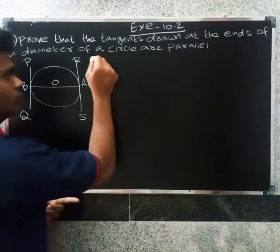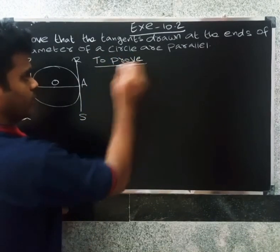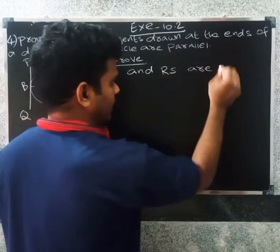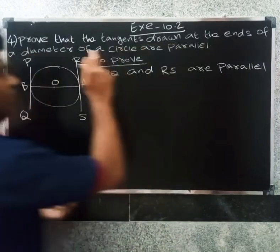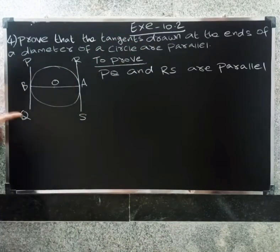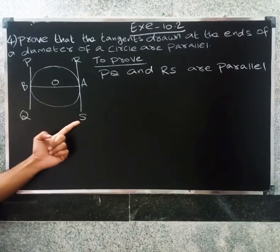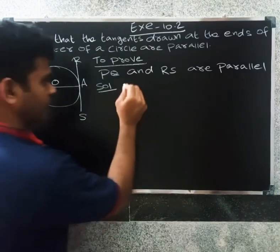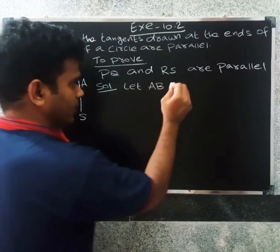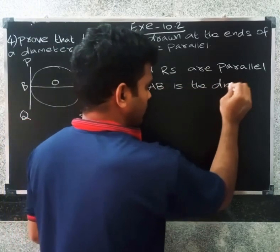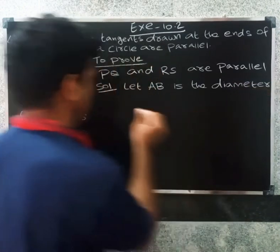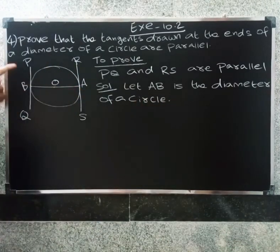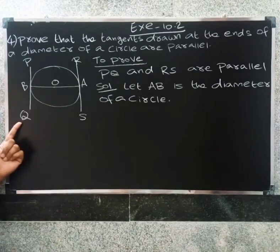To prove: PQ and RS are parallel. So let AB be the diameter of the circle. PQ and RS are the tangents drawn at points A and B respectively.